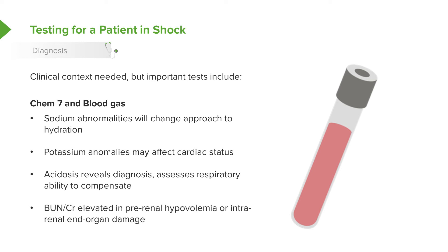BUN and creatinine are elevated both in pre-renal hypovolemia — when a patient is very dry — and in intrarenal end organ damage. Typically, in pre-renal hypovolemia, mostly the BUN will go up while creatinine stays relatively normal. However, in intrarenal end organ damage, you'll see both levels rise, allowing you to distinguish between the two.